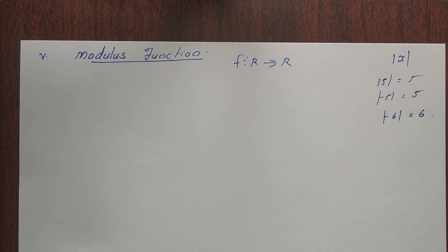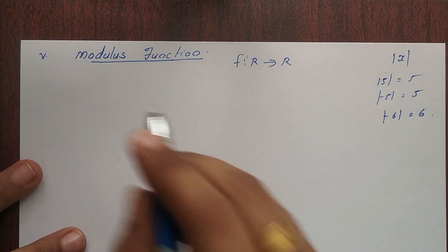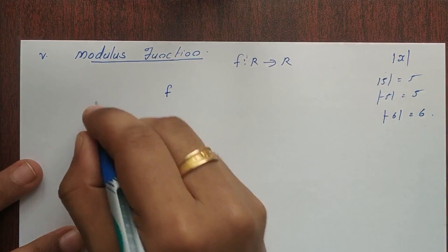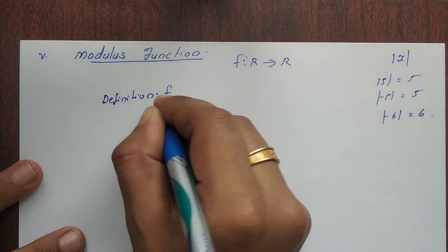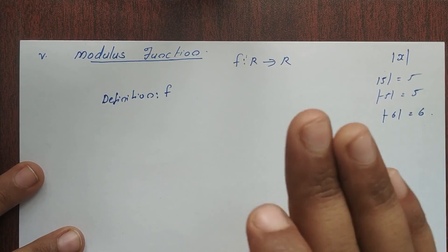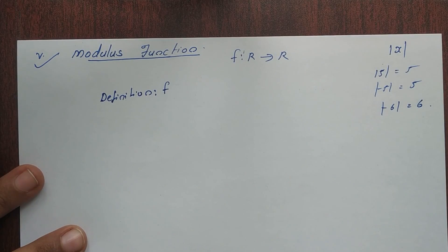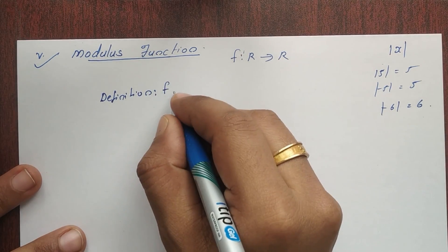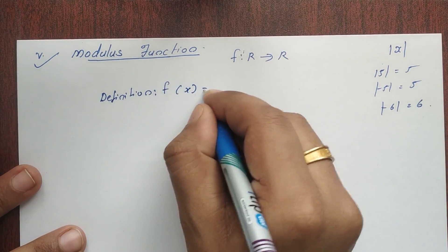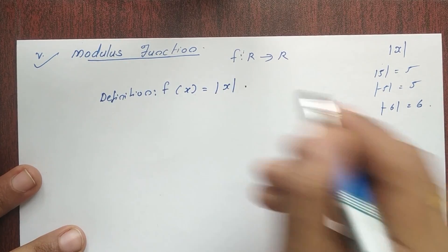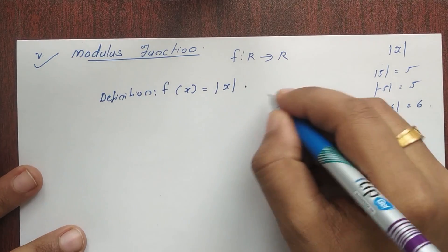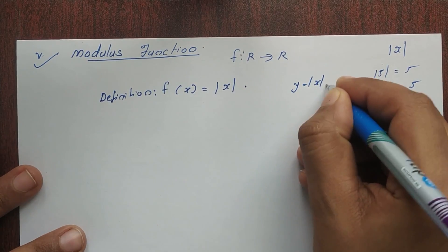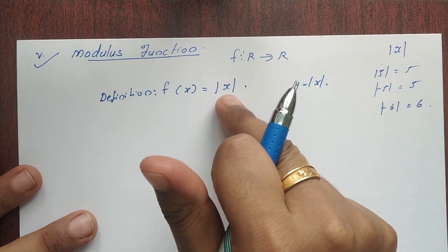Modulus function is defined as modulus function. Here is the definition. I am going to learn the definition of this modulus function. If we have 3 marks, we have to learn the function. This is the modulus function. f of x is equal to mod x. That is y is equal to mod x.